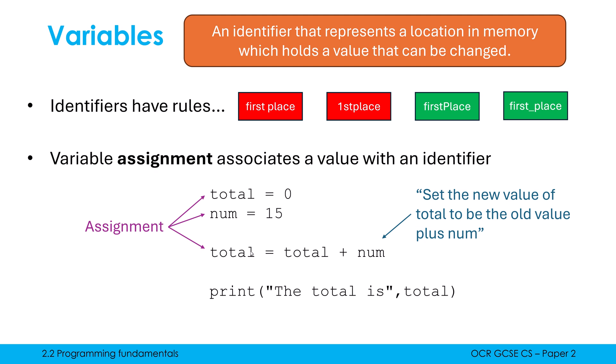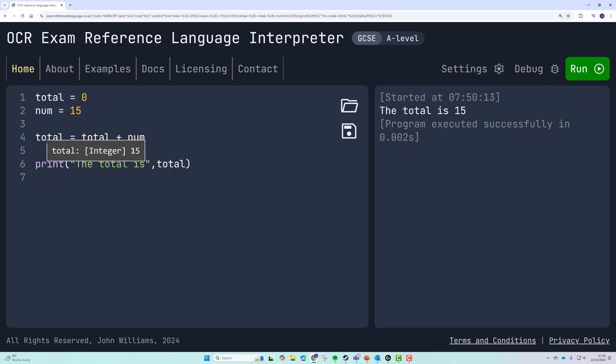Really what this statement is saying is set the new value of total to be the old value of total plus num. In other words, the program does what's on the right hand side first and then it will save it as whatever is on the left hand side. The bottom line is a print line. Print is how we show messages on screen to the user. The comma is replaced with a space - it's how you can combine variables with strings. When I run this code, we can see the value is 15. Total equals total plus num set total to be 15 because 0 plus 15 is 15. Because total didn't have any quotation marks, it's treated as a variable, therefore the value associated with it is used instead of the word total.